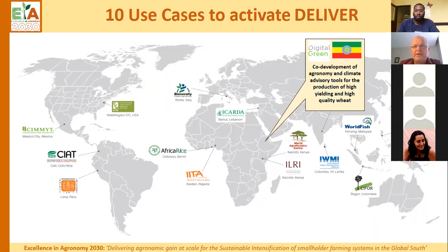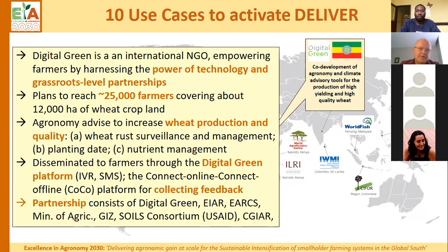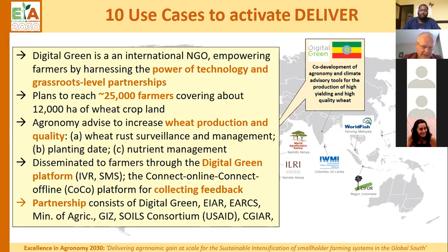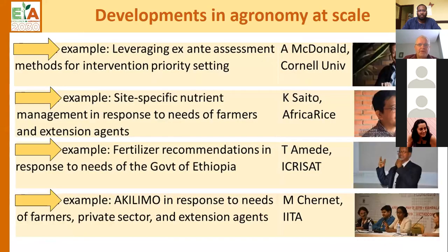One example is the Digital Green use case led by CIAT in Ethiopia. They want to reach 25,000 farmers in the next few years with advisory on increased wheat production and quality. We will work with them on seed rate management, planting date advisory, and nutrient management, using a platform to connect farmers with that information. This is a partnership with Digital Green, the Ethiopian National Research System, the Ministry of Agriculture, GIZ, and the Soils Consortium supported by USAID. Now, there are contributions from colleagues who will demonstrate good results with agronomy at scale initiatives — to show we are not starting from zero. Back to you, Jonathan.